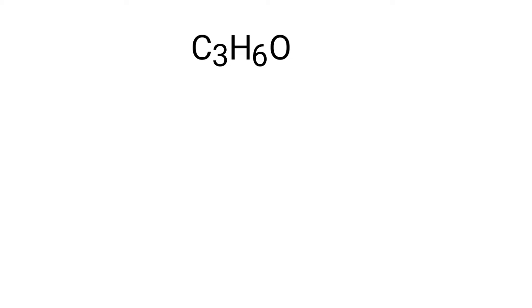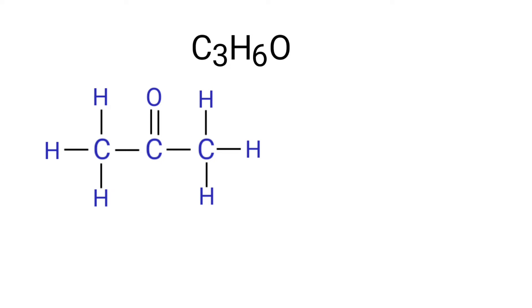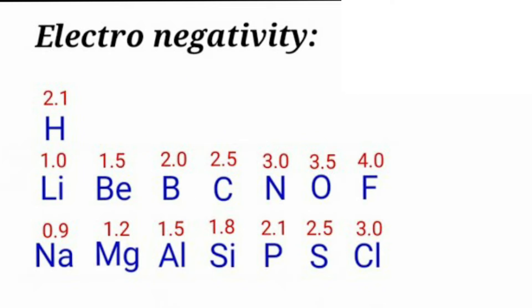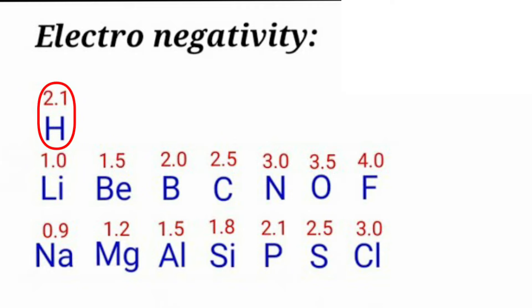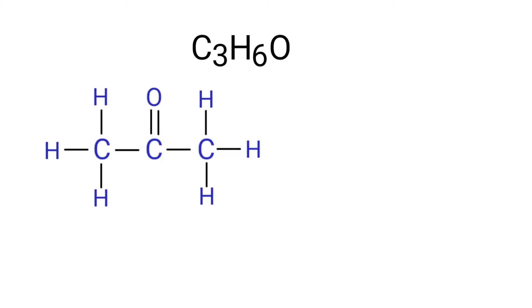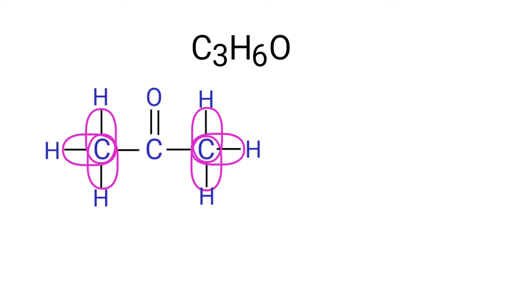Now you can draw the structure of acetone. As per the electronegativity chart, carbon has more electronegativity than hydrogen. So, in between C-H bonds, the carbon atoms can take the bonds towards itself. Therefore, the oxidation number of hydrogen is plus one and the oxidation number of carbon is minus one.